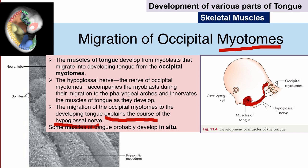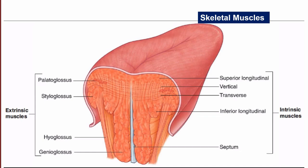There is a certain theory which predicts that some of the muscles of the tongue probably develop in situ. Here in the picture we can also see the extrinsic and intrinsic muscles. Extrinsic muscles include the palatoglossus, styloglossus, hyoglossus, and genioglossus muscles. Intrinsic muscles include the superior longitudinal, inferior longitudinal, transverse, and vertical muscles. We have now understood how the skeletal muscles of the tongue are developed.